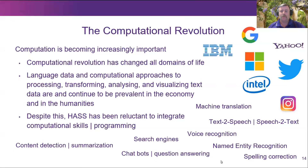Language data is at the heart of the computational revolution: machine translation, text-to-speech, speech-to-text, voice recognition, search engines, distributional semantics, content detection, chatbots, question answering, spelling correction, named entity recognition — all of these are computational procedures applied to language data. The computational revolution is really driven by computational analysis of language data. And HAS — the Humanities, Arts, and Social Sciences — has been rather conservative in embracing this reality.